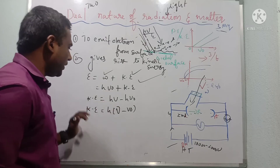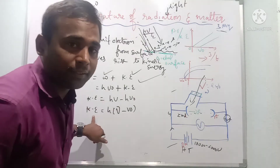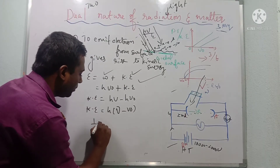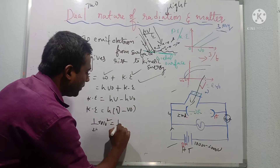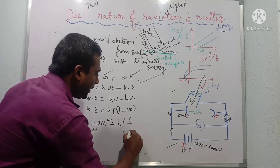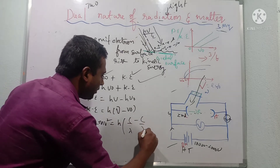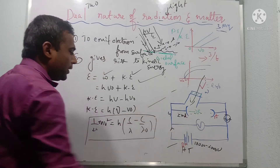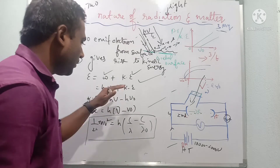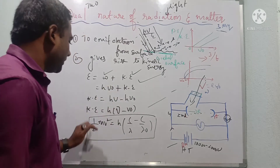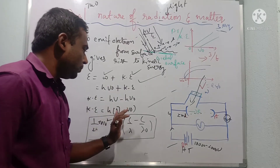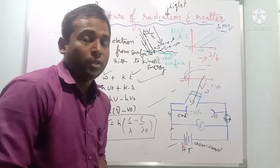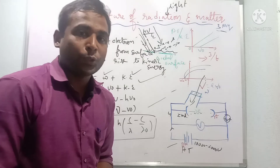So kinetic energy = ½mv² = h(ν − ν₀), which can also be written as h(c/λ − c/λ₀). Planck's constant h = 6.64 × 10⁻³⁴ joule-seconds. Please note down these formulas — they are very important for CET and NEET.